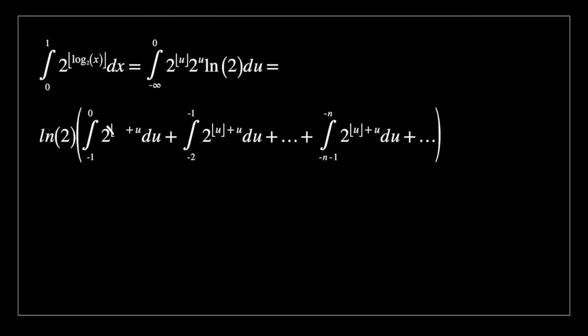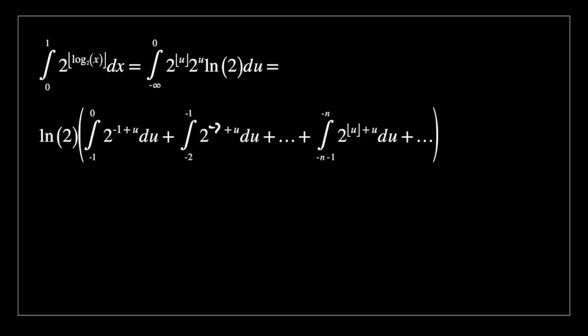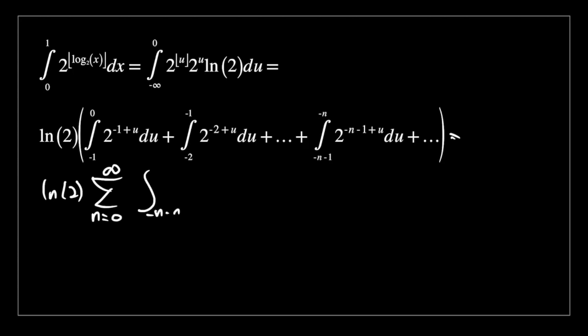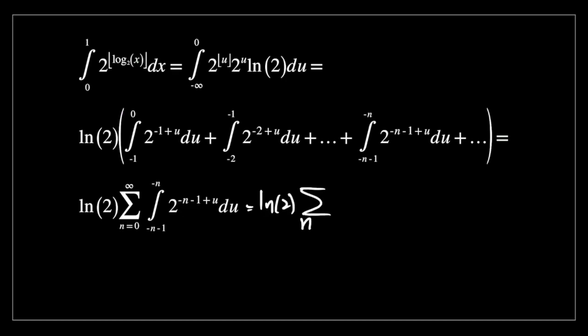So we're going to have minus 1 in this case, right? Since anywhere on that interval, floor of u is just equal to minus 1. We're going to have minus 2 on this interval and minus n minus 1 on this interval. Now I'm going to change the notation slightly. So I'm going to have log of 2 times our summation sign from n equals 0 up to infinity. So here's where the limit part comes in of our integral from minus 1 minus n to minus n of 2 to the power of minus 1 plus u du. So now we have the log of 2 times our sum from n equals 0 up to infinity of 2 to the power of minus n minus 1 times our integral from minus n minus 1 to minus n of 2 to the power of u du.